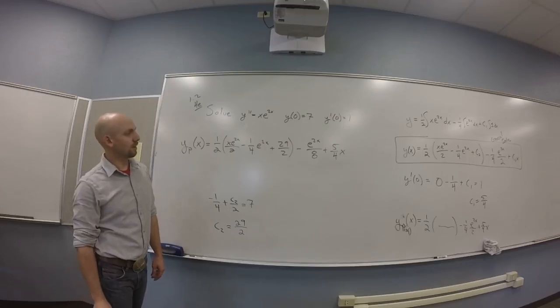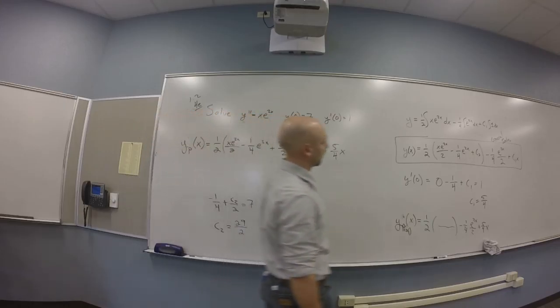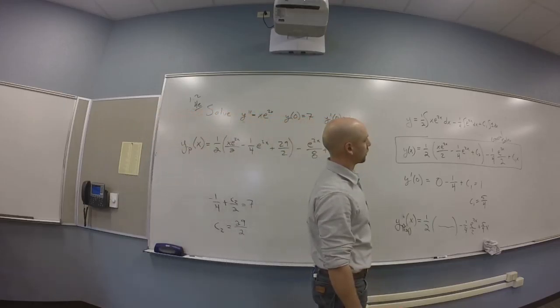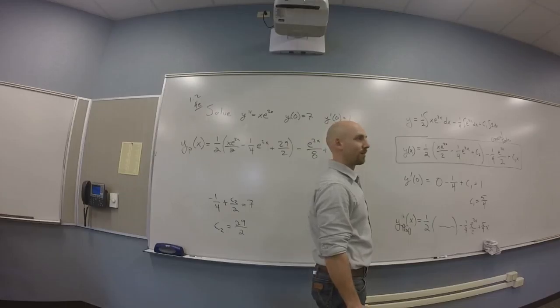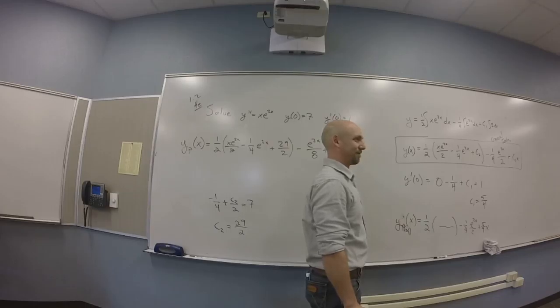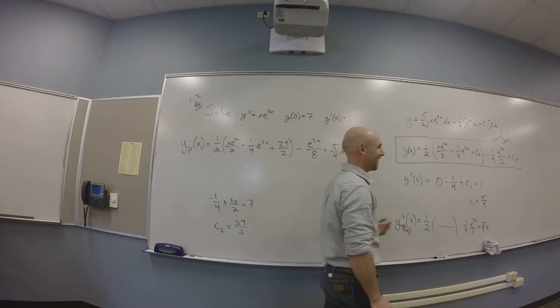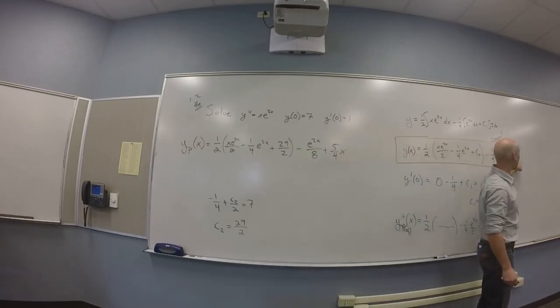So, C2 is 29 quarters times two? Maybe? Twenty-nine halves, give or take? Fourteen and a half. Is it 14 and a half? Perfect. Cool. I was scared that I had done something wrong. So, what do I do with this? I have your Y. Yeah. Now, I have my Y kind of. So, I need that particular solution. So, to write down the particular solution, I go like this. I go YP of X is, and then I need all that stuff. So, I got one-half X e to the 2X over 2 minus a quarter e to the 2X plus 29 over 2 minus e to the 2X over 8 plus 5 quarters X.